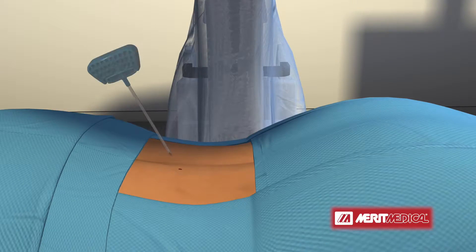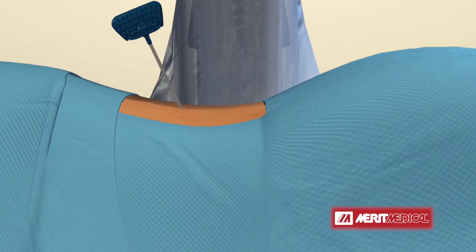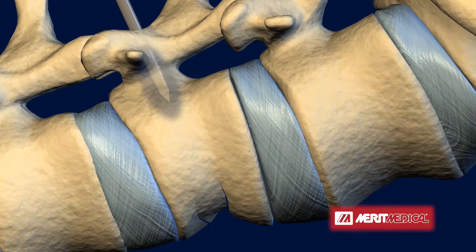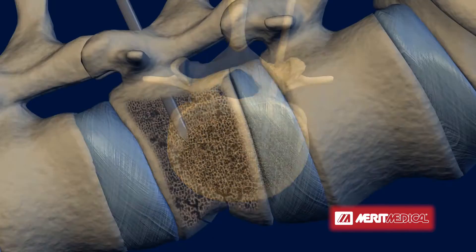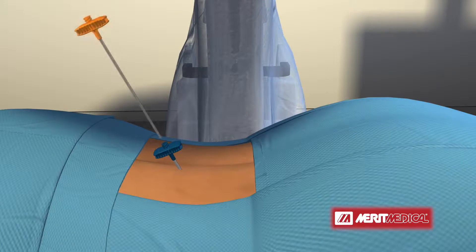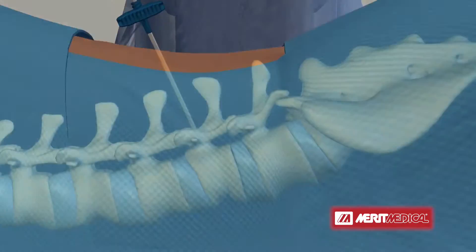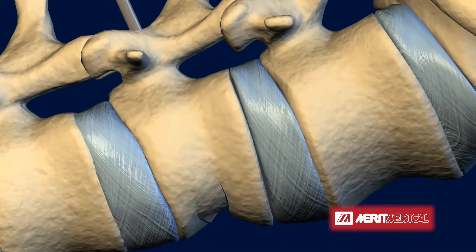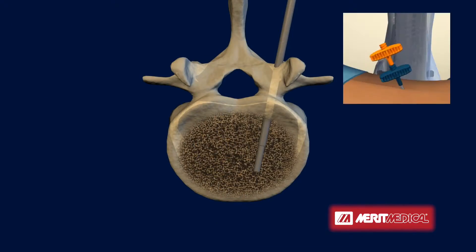The RF-TVA procedure begins with placement of the Stability introducer into the posterior one-third of the vertebral body. The straight-line osteotome is then inserted through the introducer into the anterior one-third of the vertebral body to create an initial cavity.